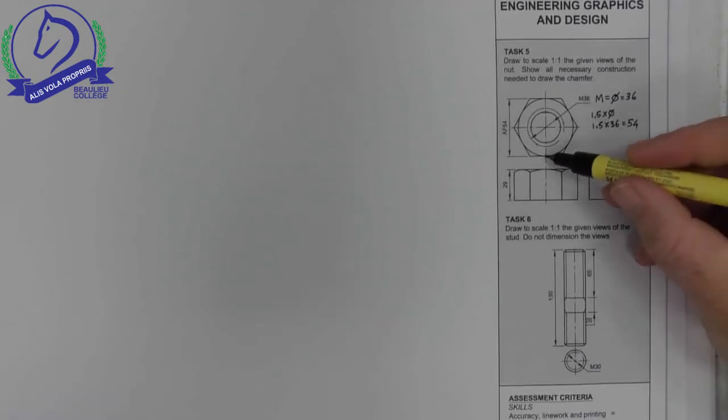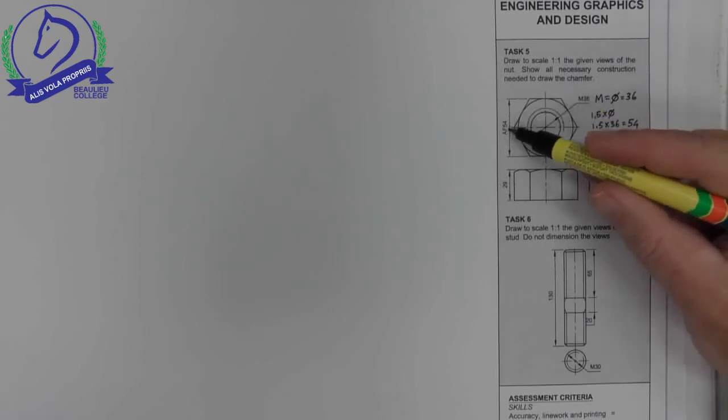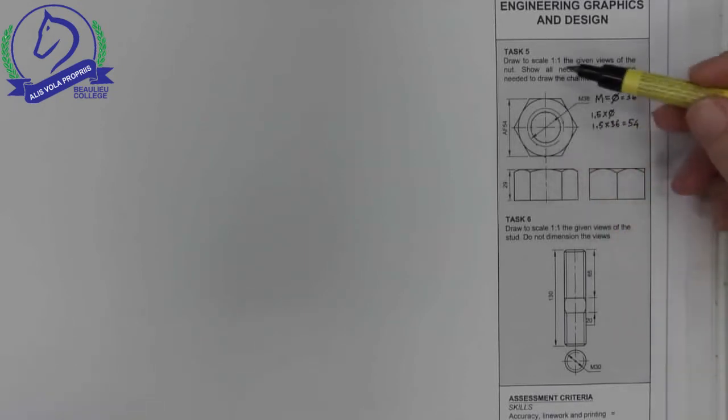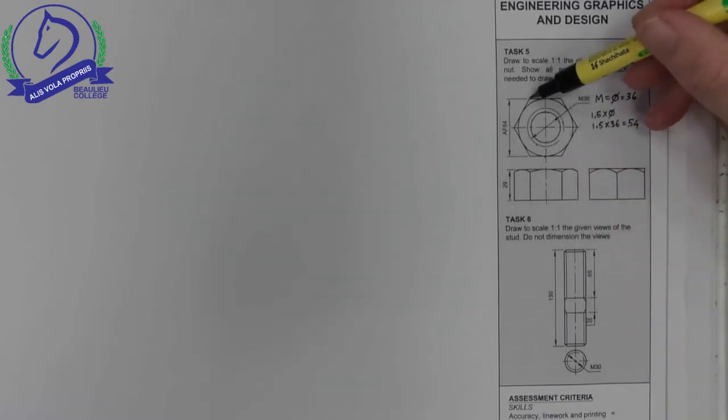So that is 1.5 times 36 equals 54. As you'll note, the tip of that is equal to this measurement there of 54.